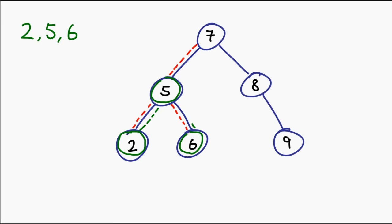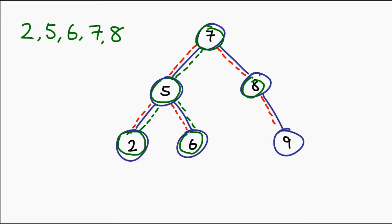Now we start backtracking. Since there is nothing else left to do, we're going to backtrack all the way to the root and pick out the value of the root as well. We're almost done here. The next thing we're going to do is visit the right subtree of the root. So we proceed in this direction down to 8. Now we're going to have to pick out 8 at this point, and the reason for that is there are no left children. However, there is a right child, which is why we are proceeding in this direction to pick out our last item in this tree — that is the value 9.